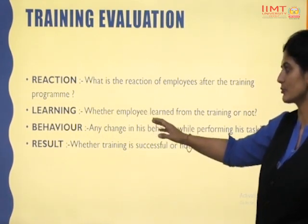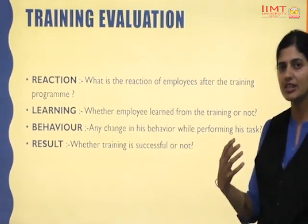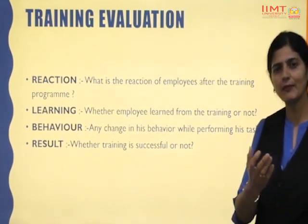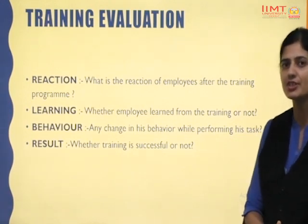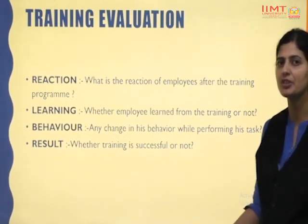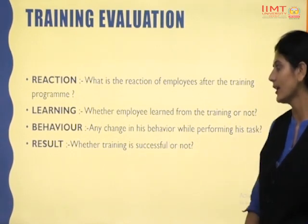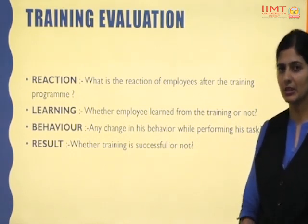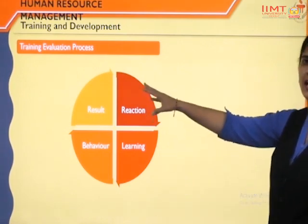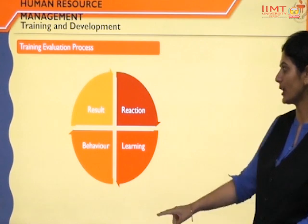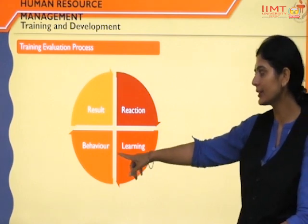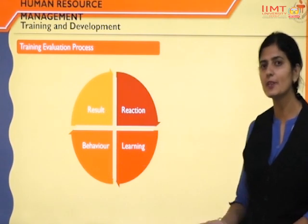This should be very clear in the learning phase. Next is change in behavior — we try to note whether there is any change in their previous behavior after getting training, whether they are doing their job more confidently now, and whether there is any change in their behavior. Next is result — we measure whether the training program was successful or not. With the help of a diagram, we can evaluate the success of the training program through the reaction of employees, any increment in their learning, any change in their behavior, and whether there is any boost in results.